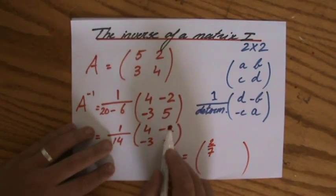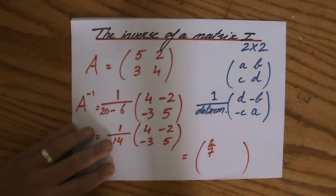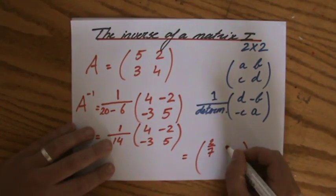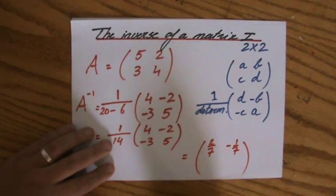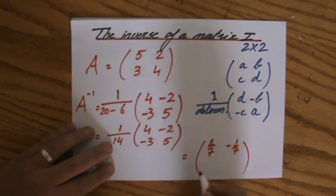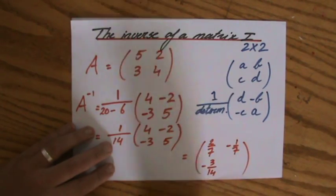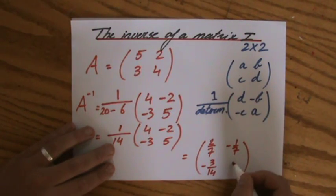1 over 14 times minus 2 is minus 2 over 14, which is minus 1 over 7. 1 over 14 times minus 3 is minus 3 over 14. And 1 over 14 times 5 is going to give you 5 over 14.